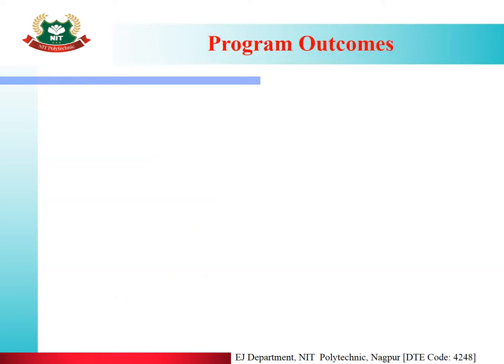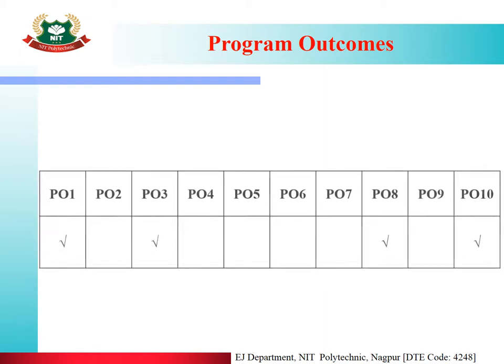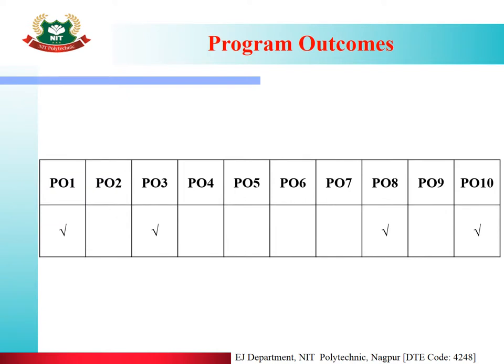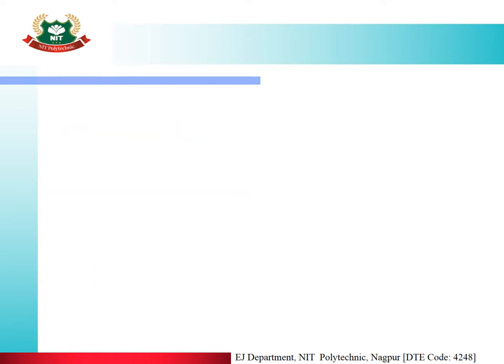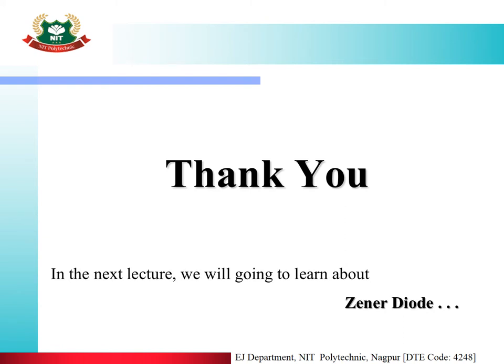Regarding program outcomes, there are 10 POs in total (PO1 to PO10). The POs that map to today's topics are PO1, PO3, PO8, and PO10. To summarize today's lecture: we covered the PN Junction Diode, its construction and working, and its applications. In the next lecture, we will learn about the Zener Diode. Thank you.